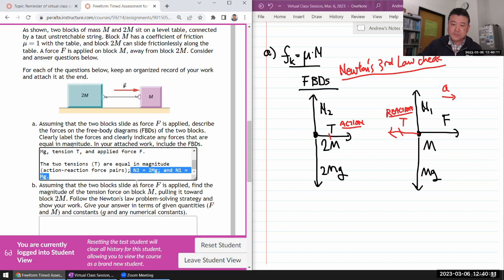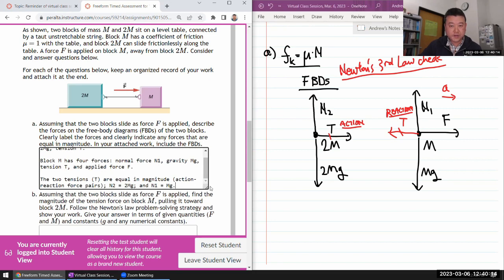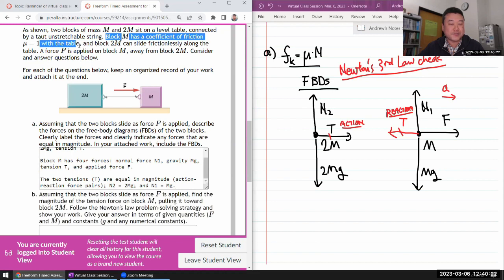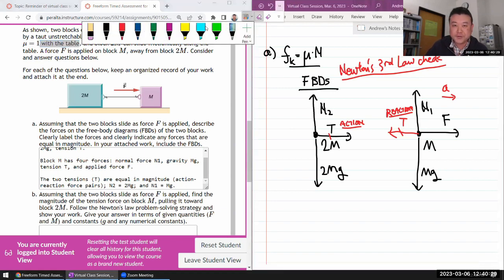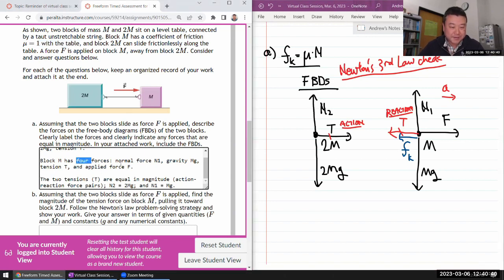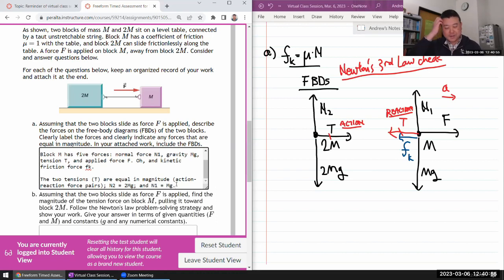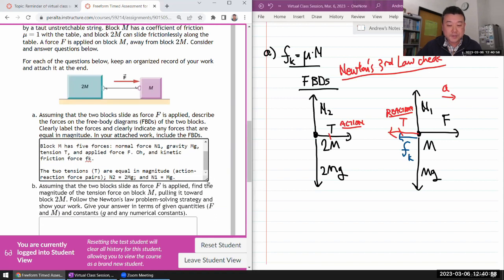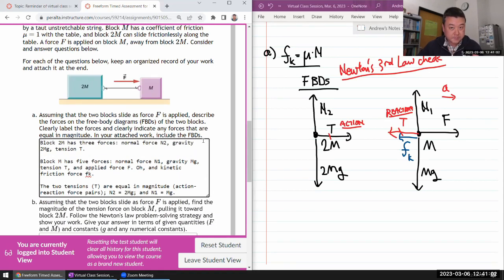Okay. So that's all the forces and clearly. So let's do it this way. Block 2m has three forces. N2, normal force N2, gravity 2mg, tension T. I think if I say this much, it's clear what directions there are. And block M has four forces. Normal force N1, gravity Mg, tension T, and applied force F. The two tensions T are equal in magnitude, action-reaction force pairs. N2 is equal to 2mg, and N1 is equal to mg. Oh wait, I forgot the force. I don't know what to do to avoid this other than just reading the question carefully. Because it measures the friction coefficient. So that means if you've forgotten friction force, you've forgotten something. When the question actually gives you a friction coefficient, you need to have a friction force. So that's five forces. Oh, and friction force Fk, kinetic friction. Just thinking about the normal force made me realize, oh yeah. If there was some friction, I wouldn't care about normal force at all.